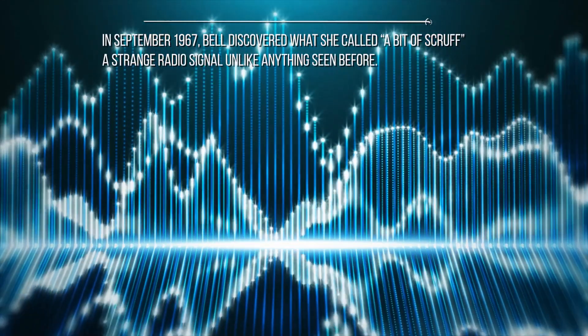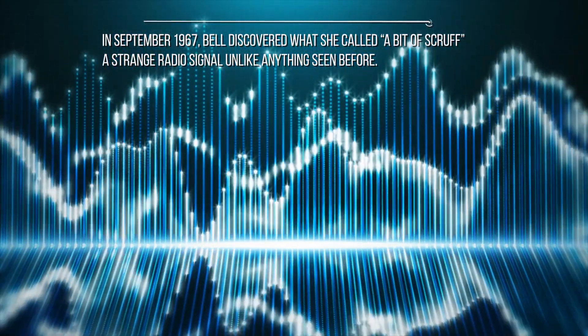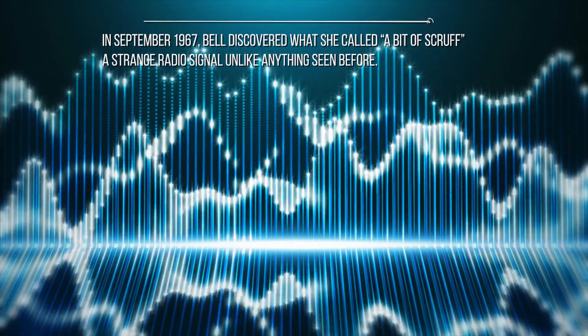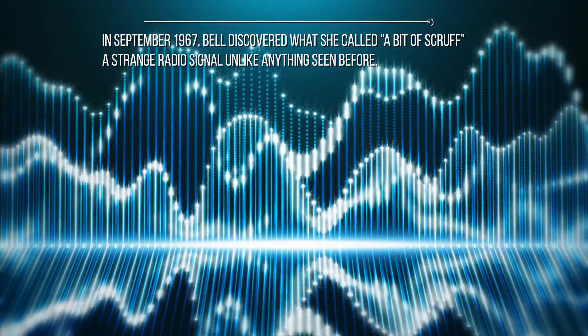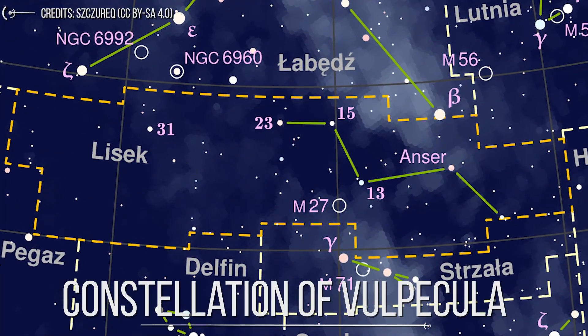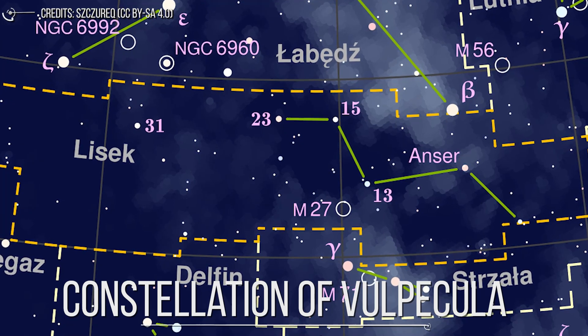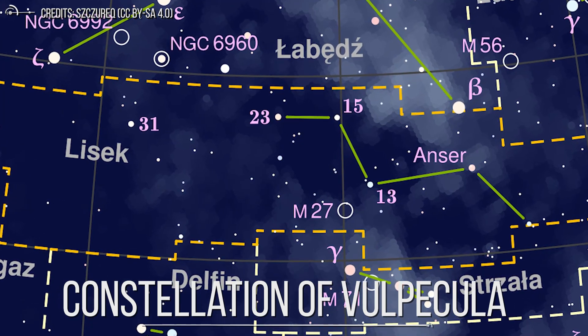In September of 1967, Bell discovered what she called a bit of scruff, a strange radio signal unlike anything seen before. In which sense was it classified as strange? Because the source in the constellation of Vulpecula, which was rapid, sharp, and intense, had an extremely regular pulse of radio radiation.